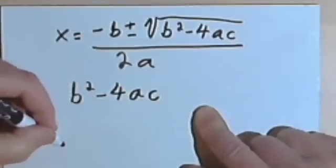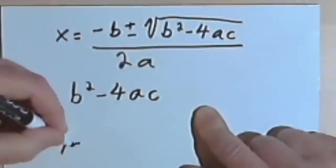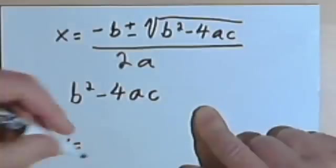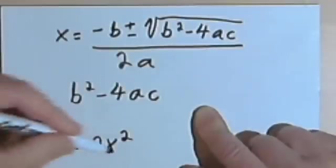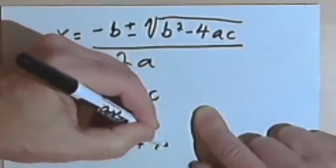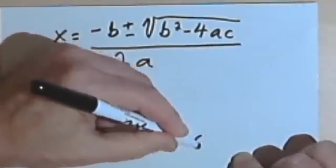Let's say you have a quadratic equation and it's in standard form. So let's say we have something like y equals 2x squared plus 7x plus 6.